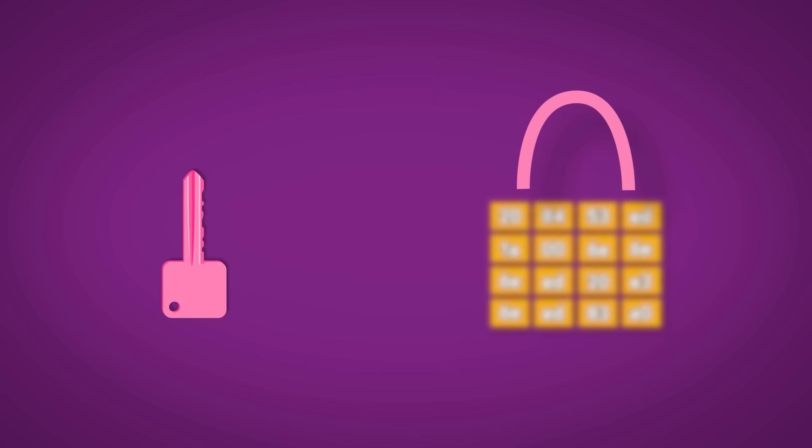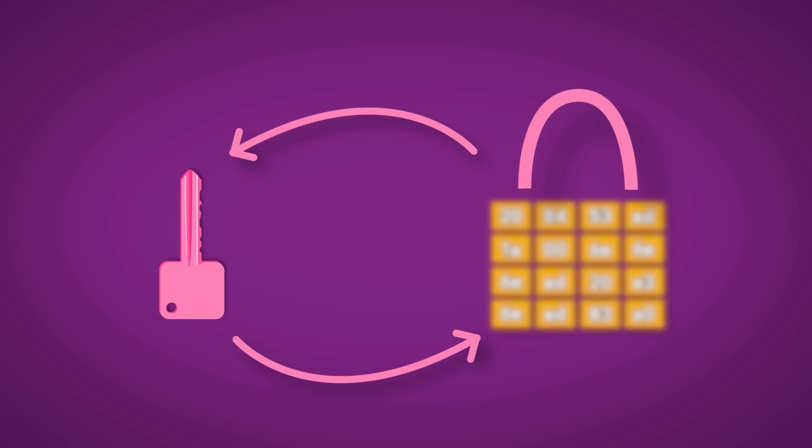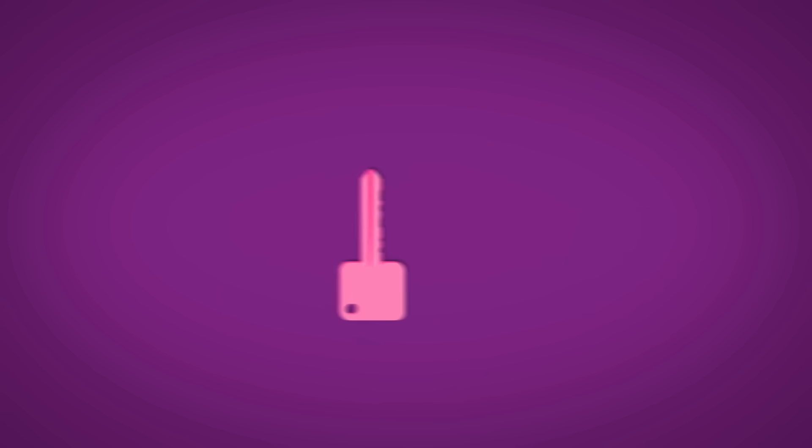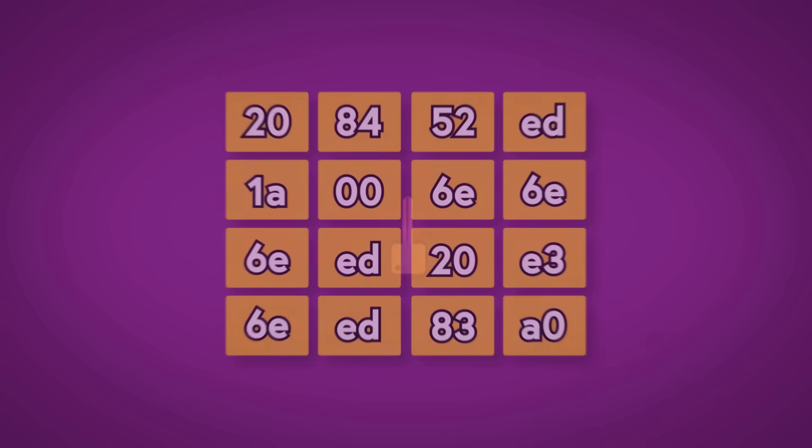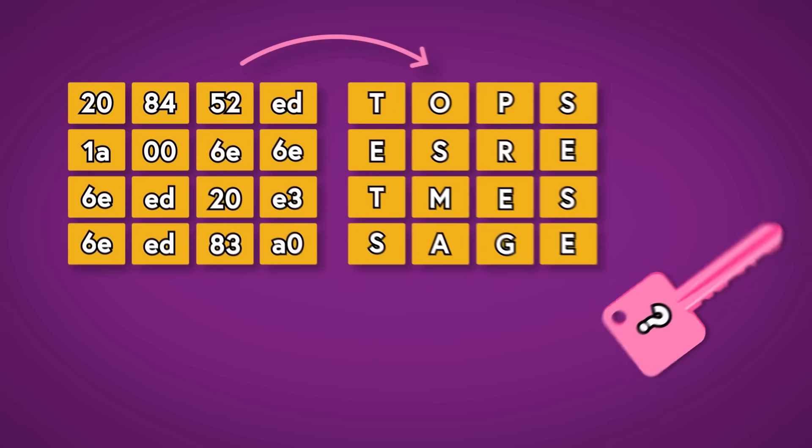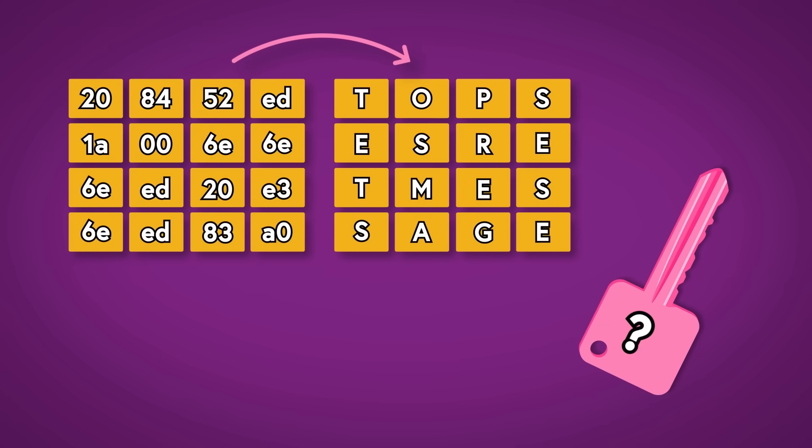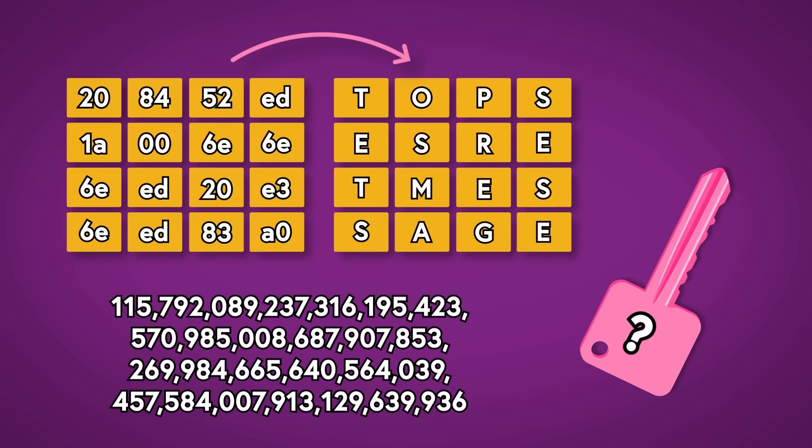So long as you have the original key, every single step that we took is reversible. You just have to do it backwards, in the right order, to get the text that we started with. But if you don't have the key, the only way you can turn this into this is by, well, guessing the key. You just have to guess approximately this many times.